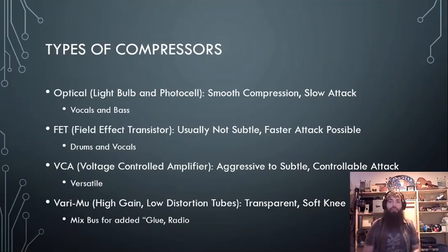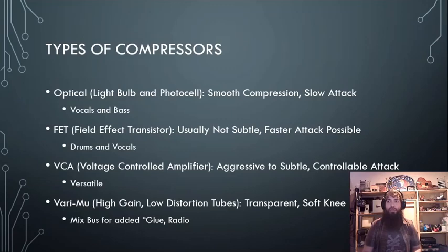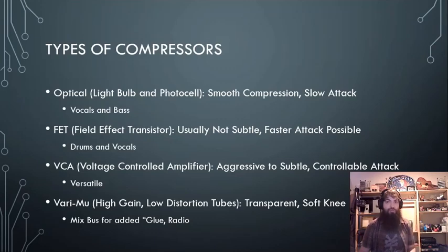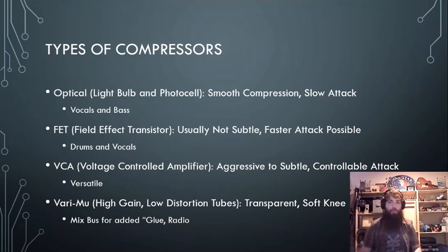Then there's the VCA — voltage controlled amplifier compressor. These are kind of what we find in our plugins, effectively using IC chips. What's cool about them is they can go from aggressive to subtle because they have such a variance in attack — extremely fast to really slow.